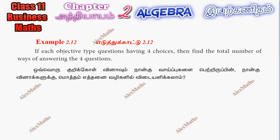Hi students, this is Alex here. Example 2.12: If each objective type question has 4 choices, find the total number of ways of answering 4 questions.